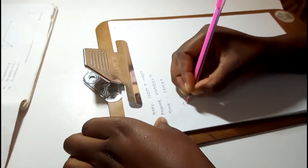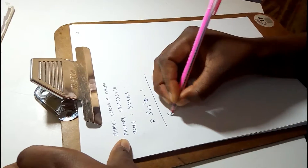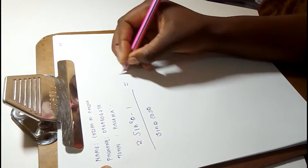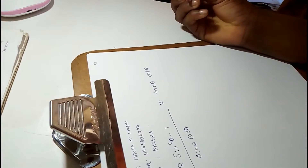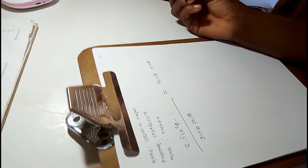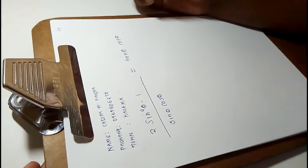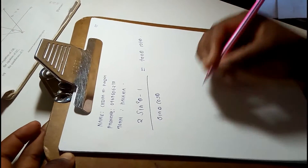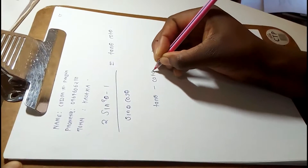I'm going to copy the identity on my paper: two sine squared theta minus one, over sine theta cos theta, is equivalent to tan theta minus cot theta. When proving an identity, you can either prove from the left-hand side or the right-hand side. In my case, I'm going to prove from the right-hand side, so I'll copy the right-hand side: tan theta minus cot theta.